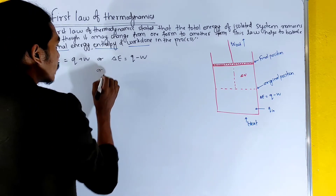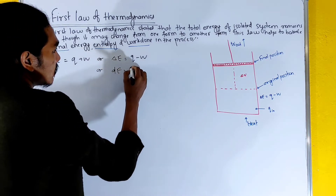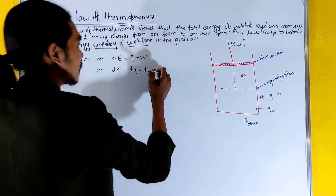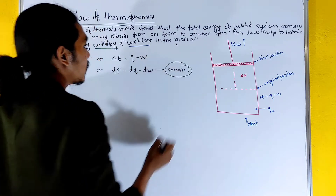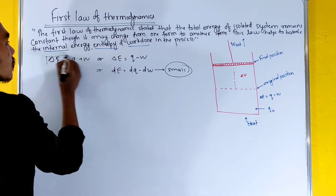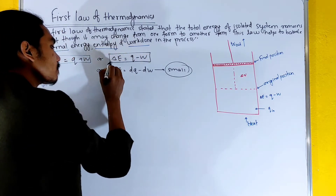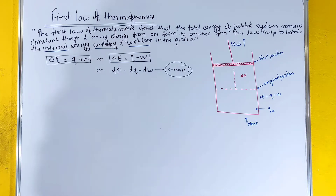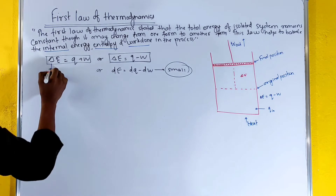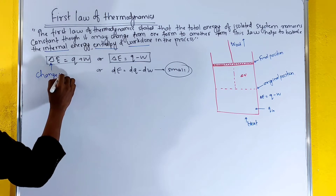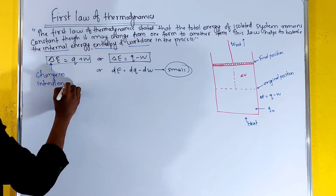In differential form, we can write dE equals dq minus dw. We apply these conditions for small changes. Delta E represents the change in internal energy.